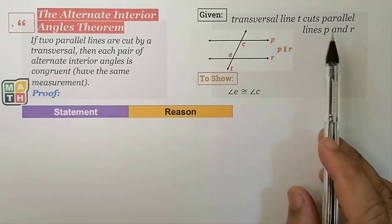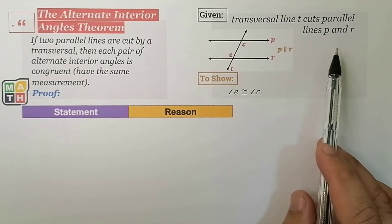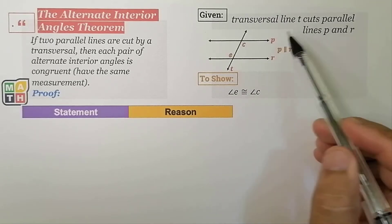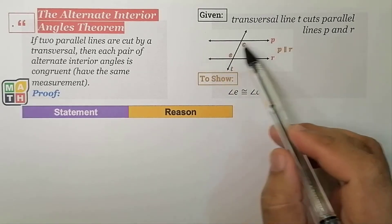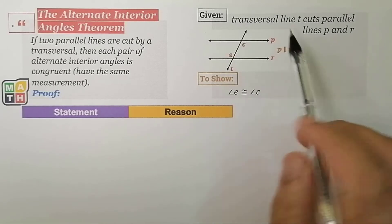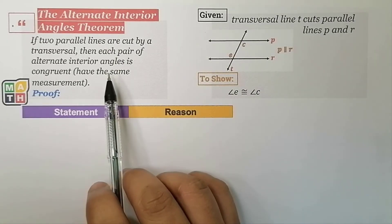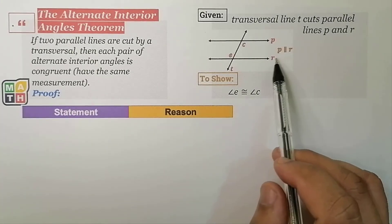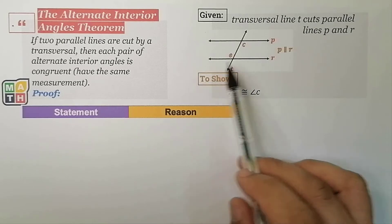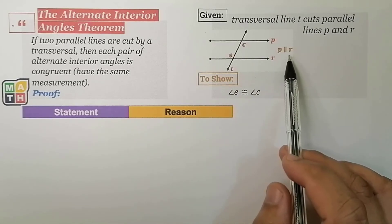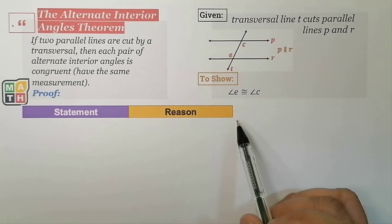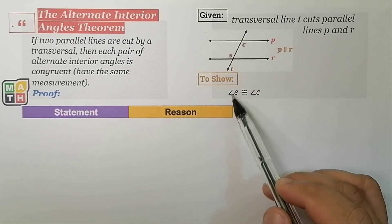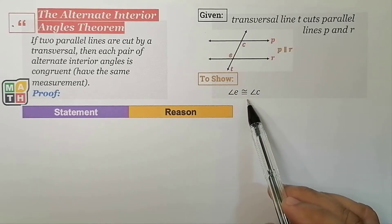For this theorem, let us consider this given situation. Let us say a transversal line T cuts parallel lines P and R. This theorem will only work for parallel lines. Hence, we have the claim that line P and line R are parallel. From this, we need to show that the two Alternate Interior Angles, Angle E and Angle C, are congruent.